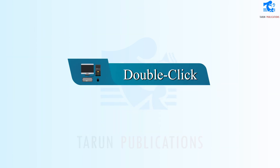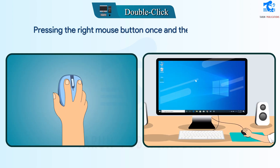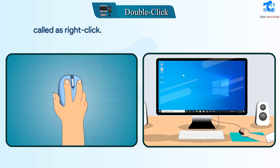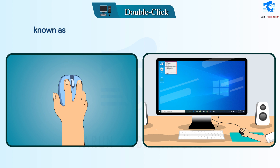Right click: Pressing the right mouse button once and then releasing it is called a right click. When we right click, a list of commands is displayed, which is known as the right-click menu or the pop-up menu.